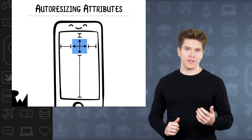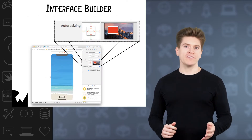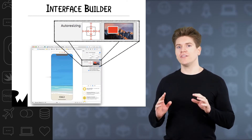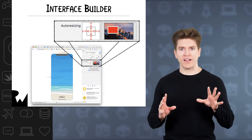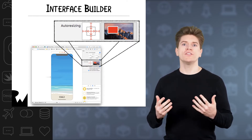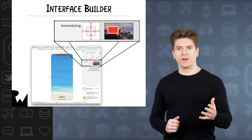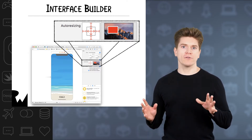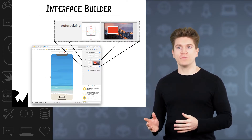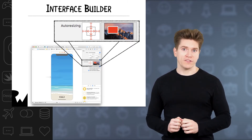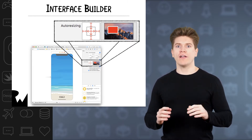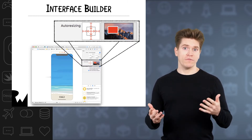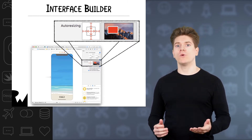Let's see how to set these in Interface Builder. In the size inspector of a view that doesn't have any auto layout constraints defined, you'll see the auto resizing section. Here you can toggle the state of the lines for each margin and the width and height. Notice that the width and height have arrows at the ends of the lines — they're flexible when set and fixed when unset. But the margins all have bars at the ends of the lines, and they work the opposite way: fixed when set and flexible when unset.